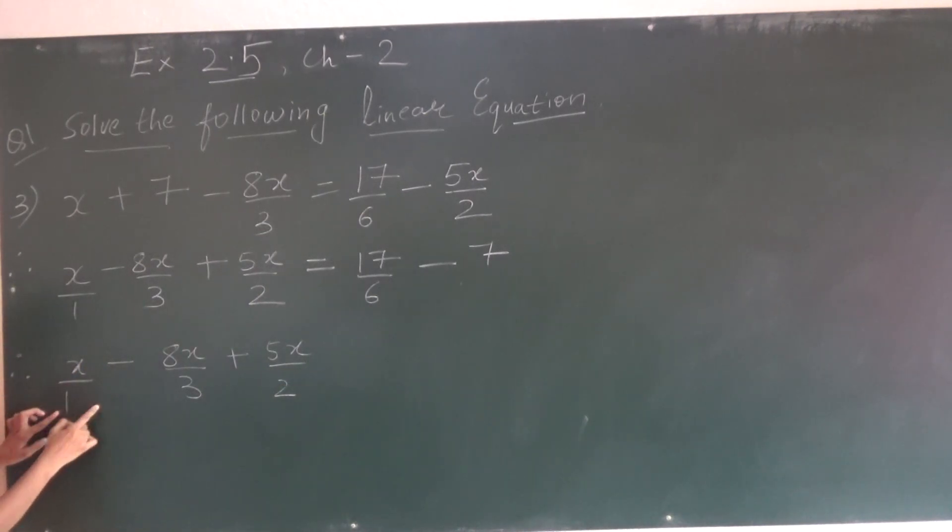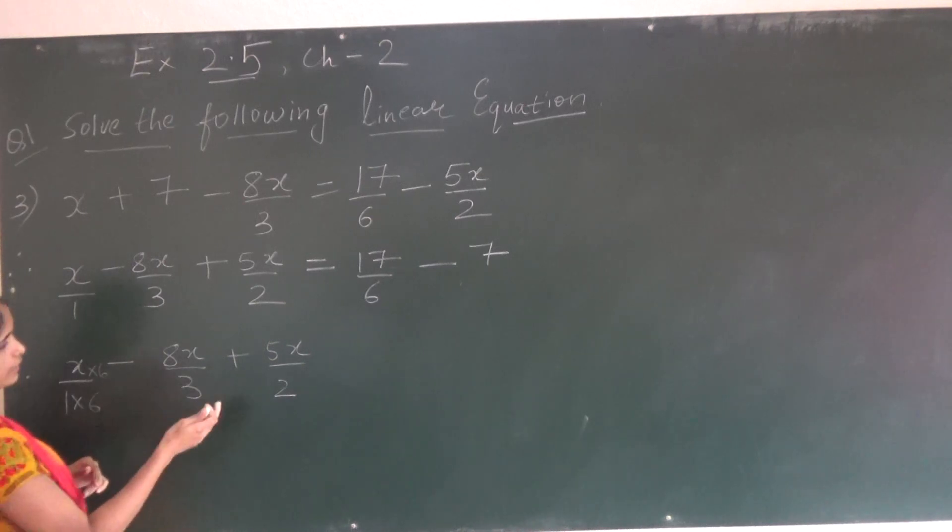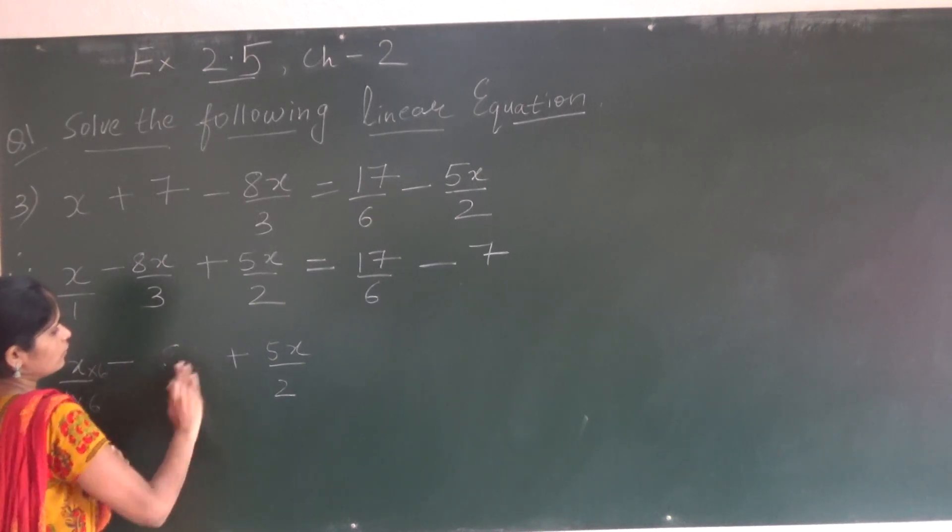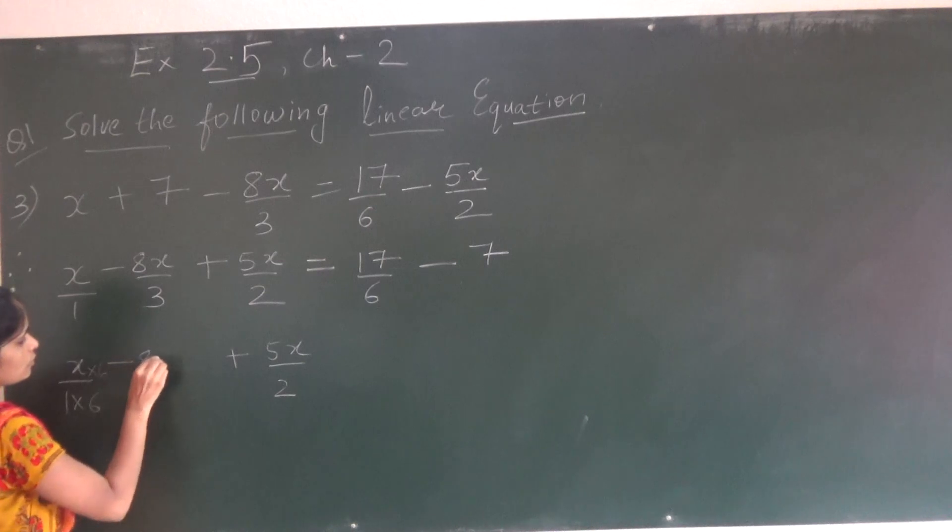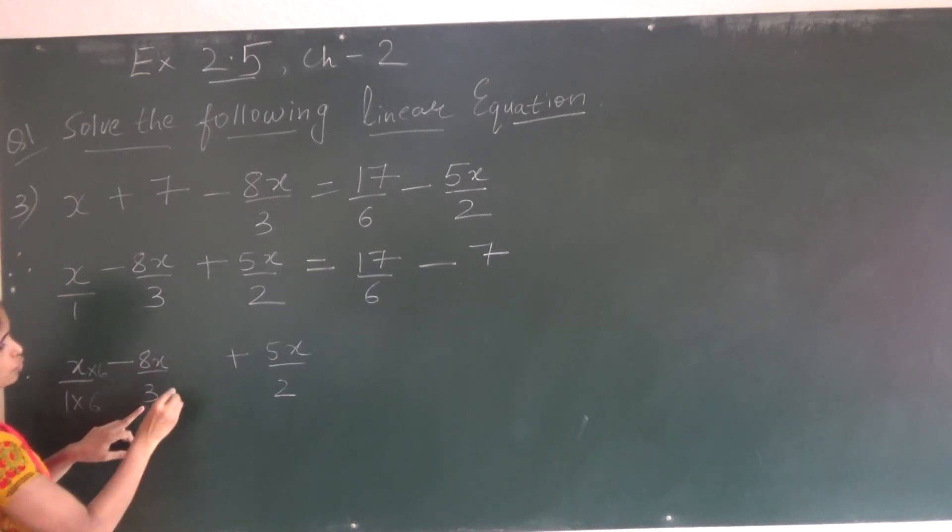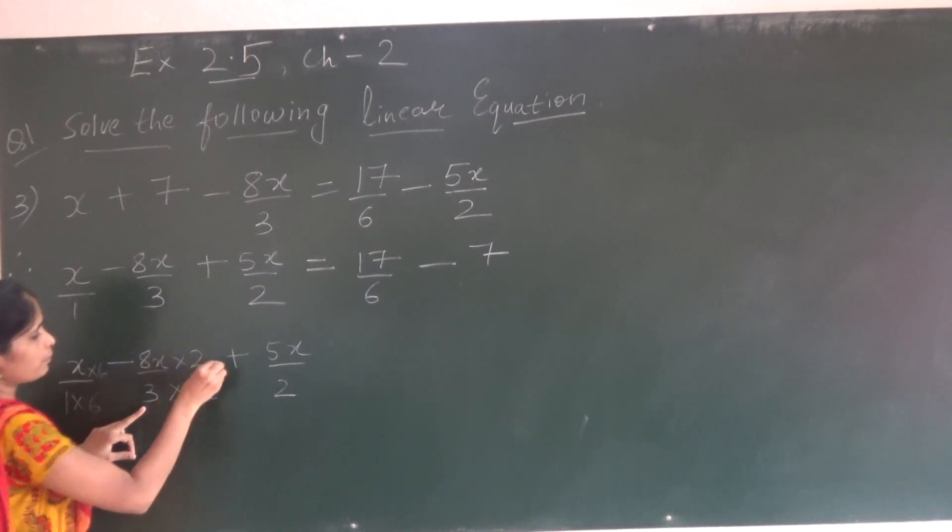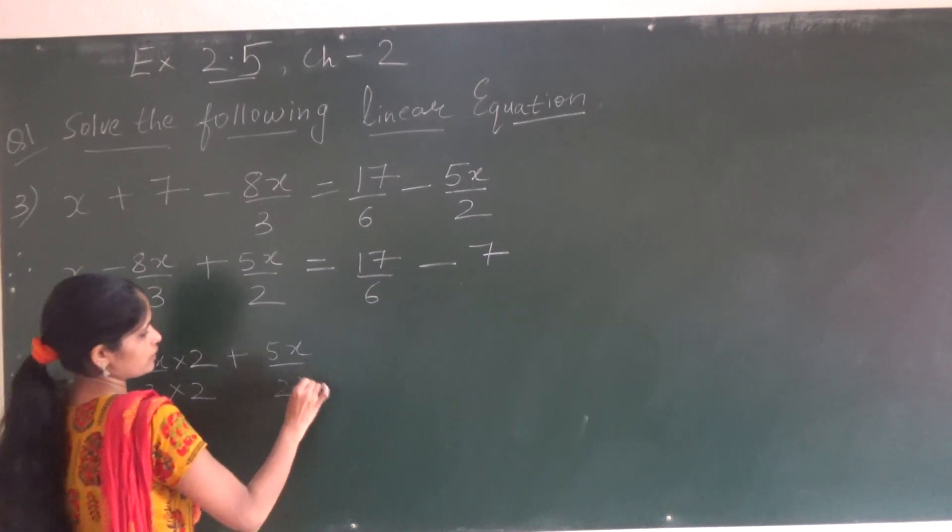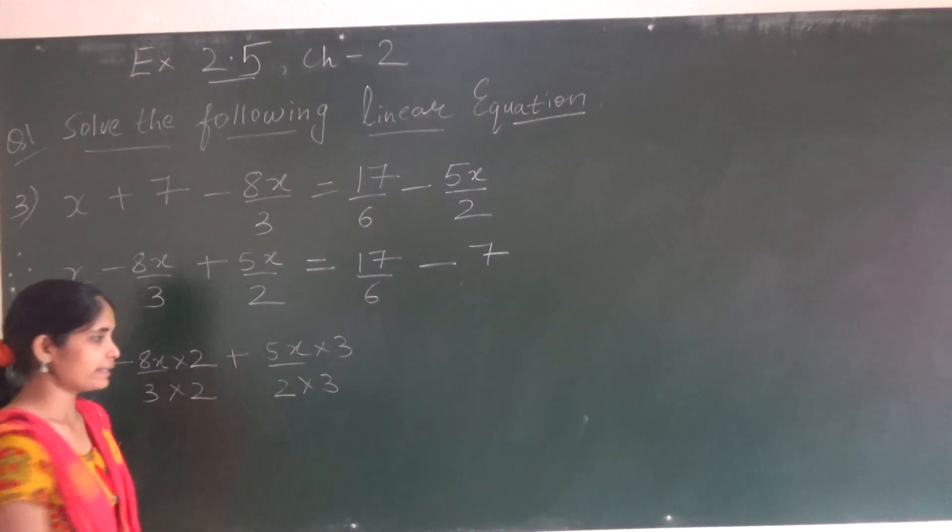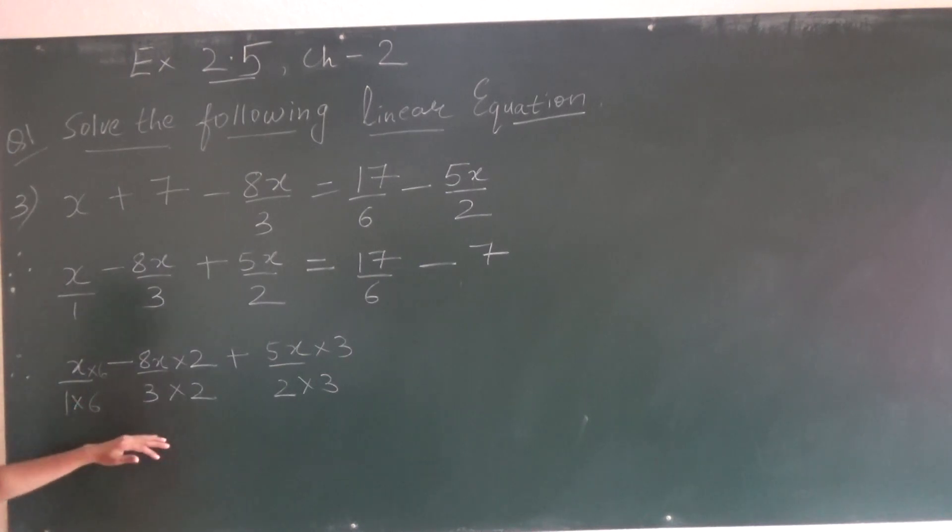Now x minus 8x upon 3 plus 5x upon 2. Here it was 1, so 1 how many times will give you 6? So we need to multiply this by 6. Now here it is 3, so 3 how many times is 6? 2. 3 2's. So here we are multiplying by 2. Now 2 how many times 6? 3 times. So here I am writing into 3.